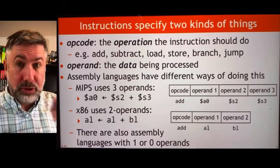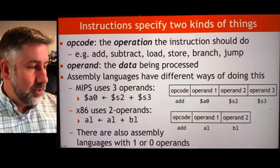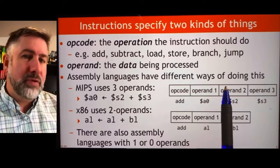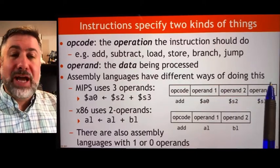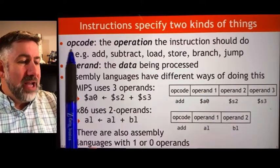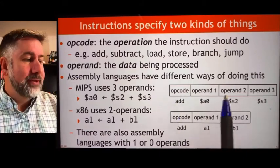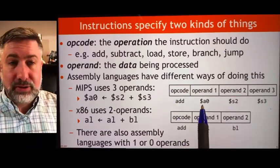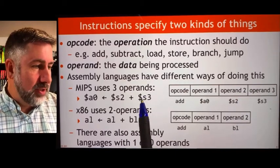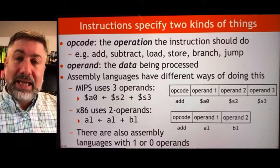For MIPS — the assembly language we're going to use in this class — we have three operands: two operands that are going to be the source of information for this operation, and one operand which is going to be the destination for the result. And we have an opcode that tells us what we want to do. So an instruction might look like: add, put the result in A0, whatever happens to be stored in S2 and S3. That's going to take S2 and S3, add them together, and put the result into A0.